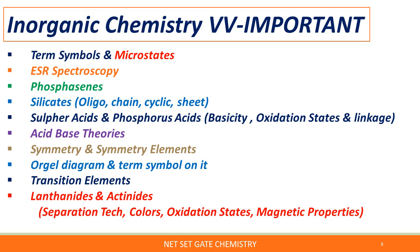The Orgel diagram is a very very important point — you have to remember the Orgel diagram based on which questions may be asked. For the transition elements, particularly the first-row transition elements, you have to remember based on coordination chemistry. Lanthanides and actinides — frequently one to two mark questions are asked in both GATE and CSIR NET on separation techniques, colors, oxidation states, or magnetic properties of lanthanides and actinides.